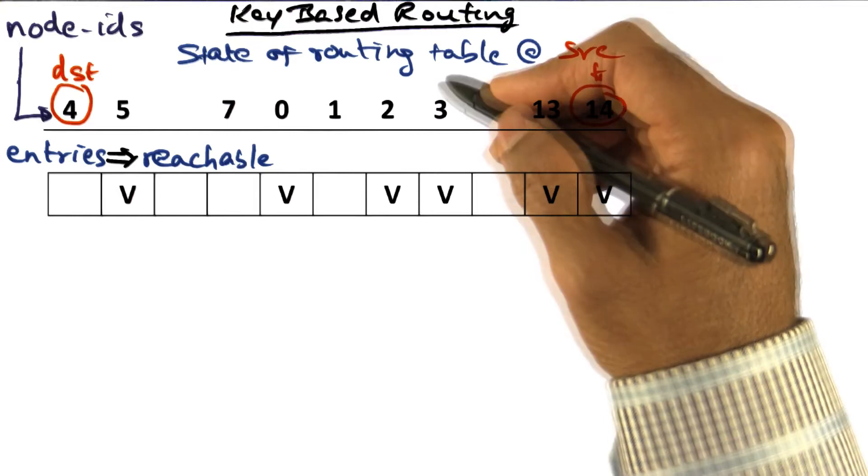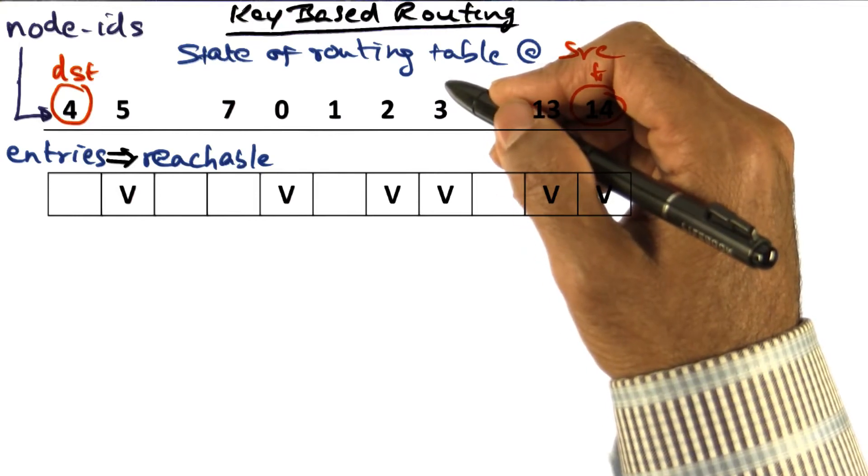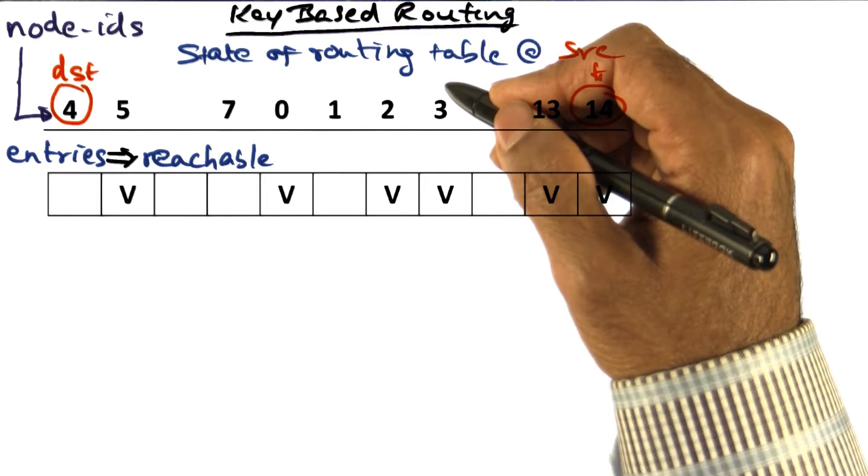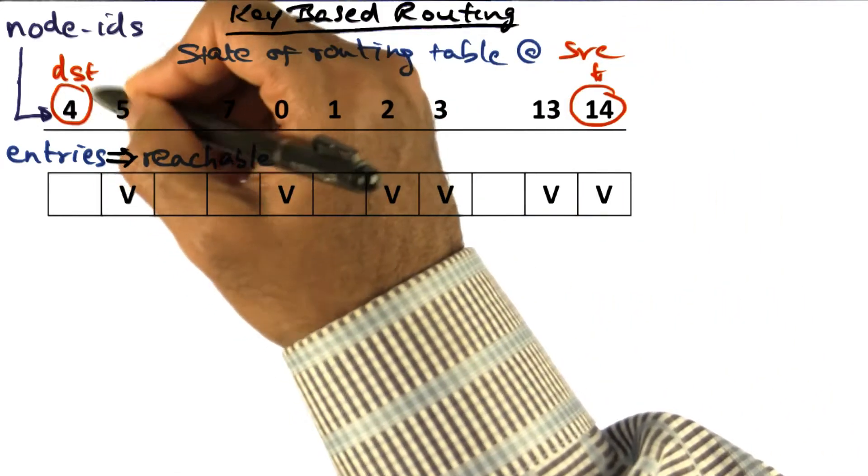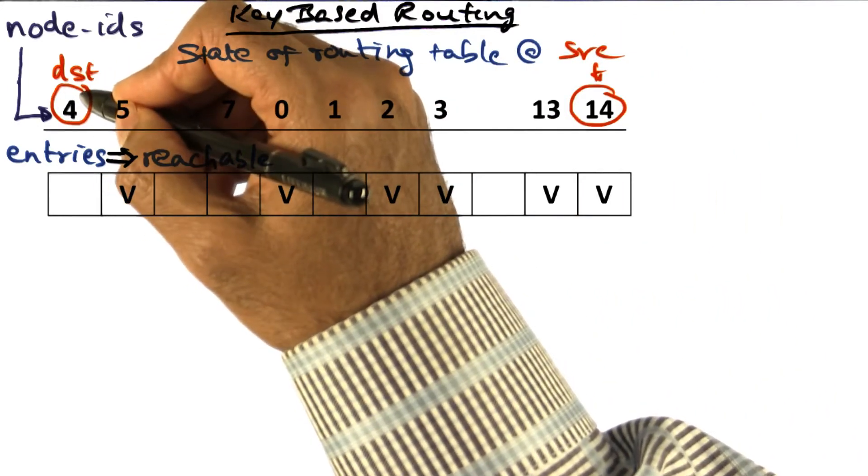Therefore, in the greedy approach, I assume that the key k (k=4) will be stored at a destination whose node ID is 4.